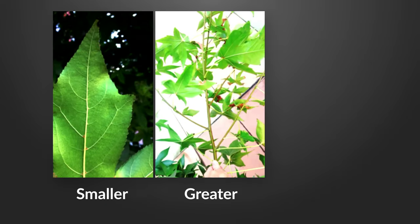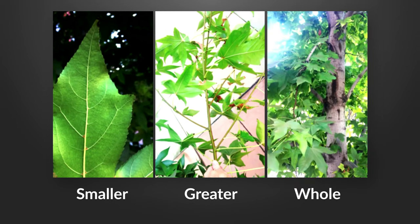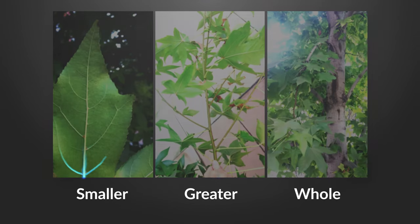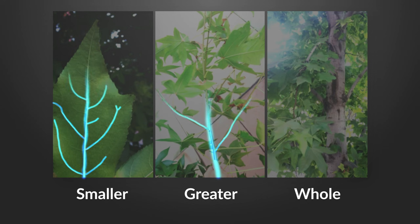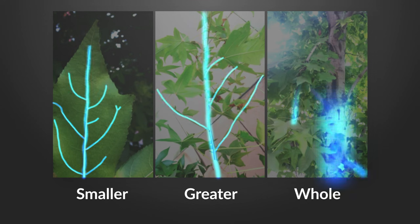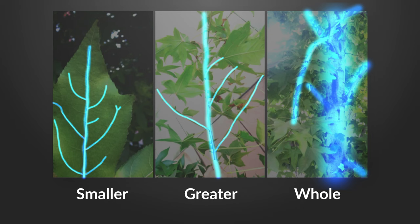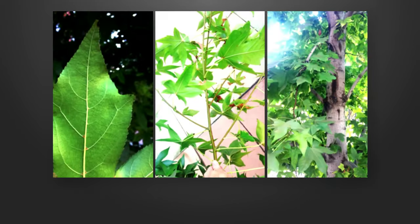Smaller is to the greater as the greater is to the whole. What we're talking about is that leaf — look at the veins in the leaf, the smaller, to the greater branch. The veins echo the shape of the branch as the greater, and the greater is to the whole. The shape of those branches echo the trunk of the tree. It's something that happens in nature. It's a really fundamental design philosophy.